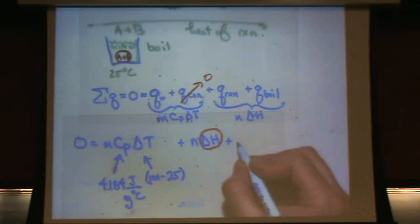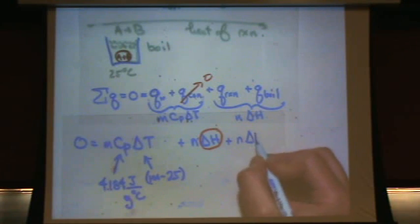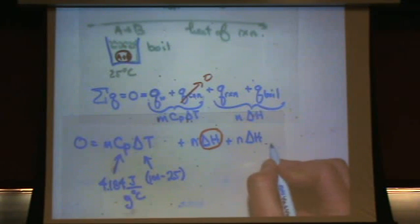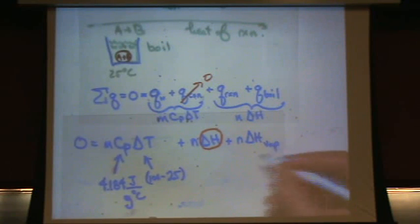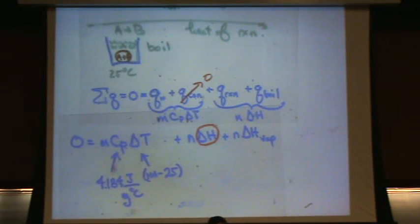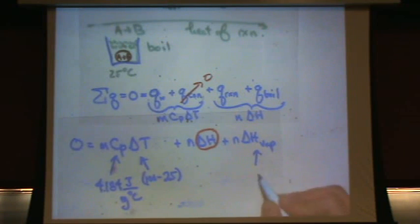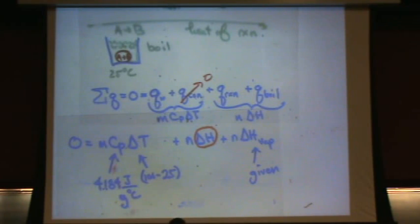Q of boil - delta H of what? What's the subscript here for boiling? Vaporization. Delta H vaporization. That's a constant, should be given to you. So this is given, and again N is moles. So you convert from mass to moles, and there you go. You solve for delta H. Pretty standard sort of problem.